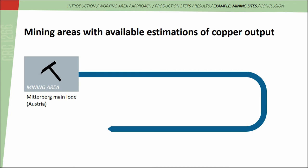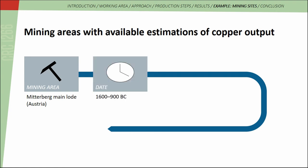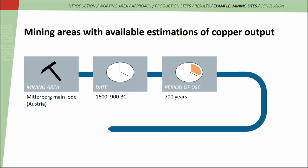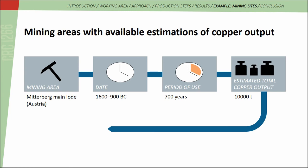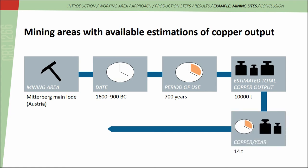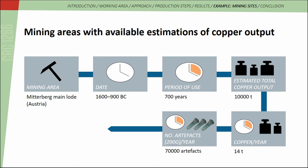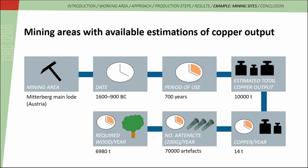This slide shows a graphic representation of my approach with an example: the Mitterberg mainland in Austria, dated to 1,600–900 BC, giving a period of use of 700 years. According to estimates, the total copper output from the Mitterberg mainland was 10,000 tons. The average copper output per year would therefore be 14 tons. If we assume one artifact weighs 200 grams, this results in 70,000 artifacts possibly produced per year. The demand for wood for the production of these artifacts, calculated from the ore-wood ratio, would be around 7,000 tons per year.